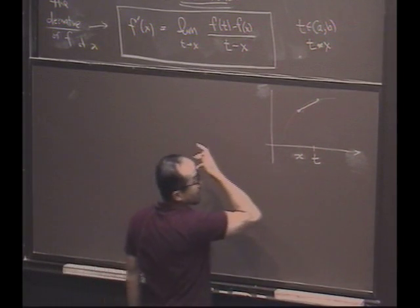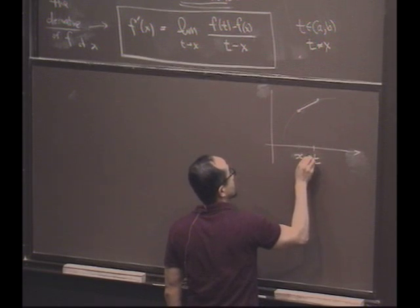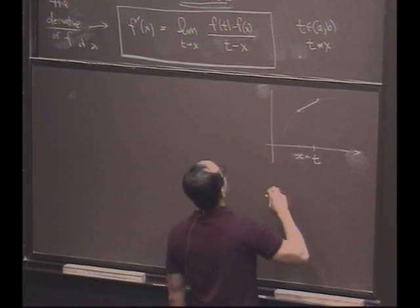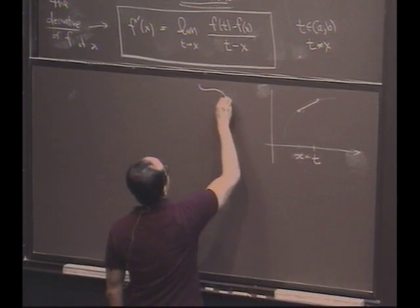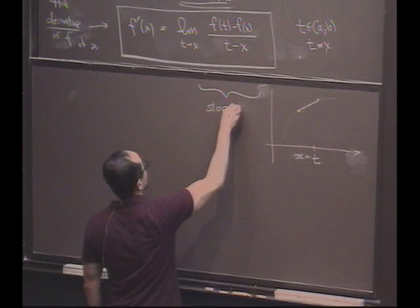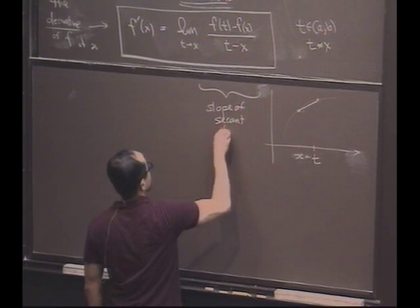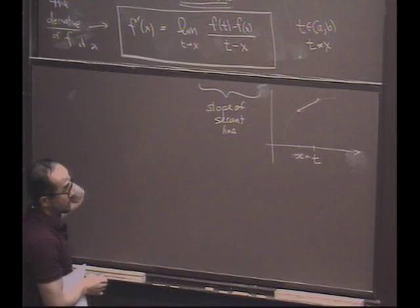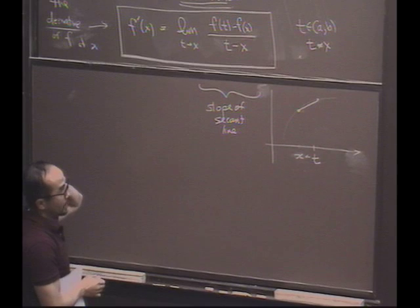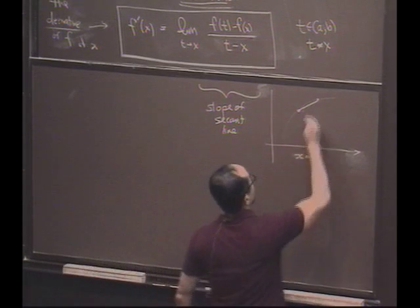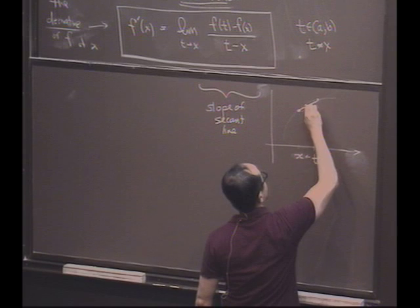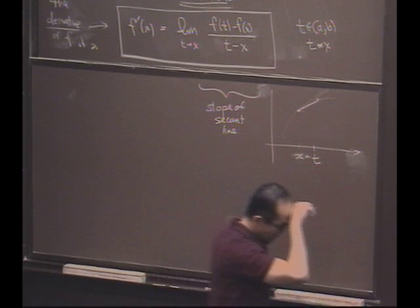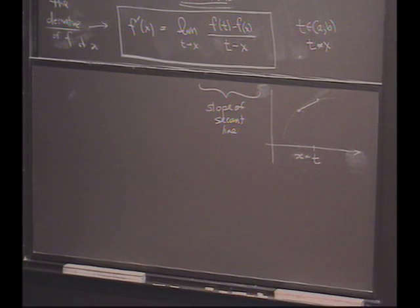And now what I do in this limit is I say, look at the slope of this secant line as I let t get closer and closer to x. So this particular expression is a slope of a secant line. And we're now taking the limit of these slopes of these lines. So if that limit exists, in this case, this has a certain slope. And now if I let t get closer, these lines seem to, their slopes seem to converge, at least in this particular picture.